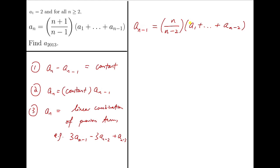Now notice that this part can be rewritten in a very simple form which is (n-2) over n times a_{n-1}. Now I can put this into our original equation, and I will get a_n equals (n+1) over n times (n-2) over n times a_{n-1} plus a_{n-1}.